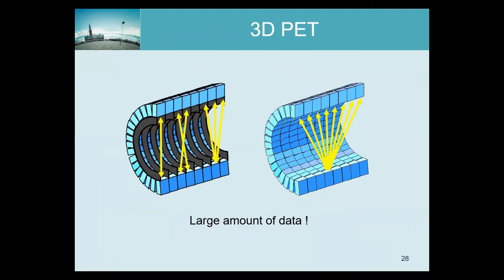I will talk briefly about analytical reconstruction in 3D PET, though not extensively because it's pretty complicated and rarely used since iterative reconstruction dominates. Still, it's good to know it exists. The original PET scanners had 2D septa — one reason was to keep the data limited since there were no disks that could store all that data, and also no algorithms to deal with fully 3D tomographic data. Fully 3D in this case means 4D. If we remove the septa, we get fully 3D data with all possible lines of response.